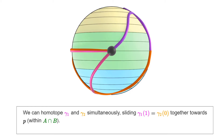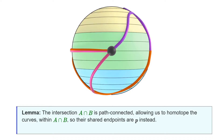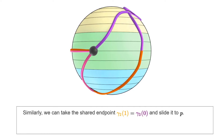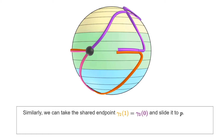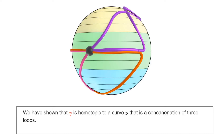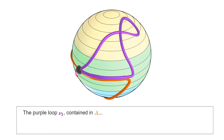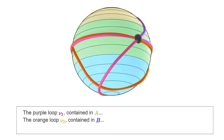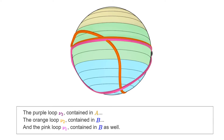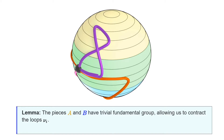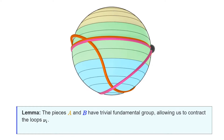This points out already the key assumption in the theorem of Van Kampen: the intersection of the two pieces must be path-connected. Now we go to the shared endpoint of Gamma_II with Gamma_III and similarly slide it towards P. The first stage of the argument is now complete. We've shown that Gamma is homotopic to another curve Nu, such that Nu is a concatenation of three loops: Nu_3 is fully contained in A, and the loops Nu_2 and Nu_1 are fully contained in B. The proof of the proposition is complete by recalling that the pieces A and B have trivial fundamental group, so each of the loops Nu_i can be contracted within the corresponding piece. The null homotopy of Nu is thus the concatenation of the null homotopies of each of the pieces.